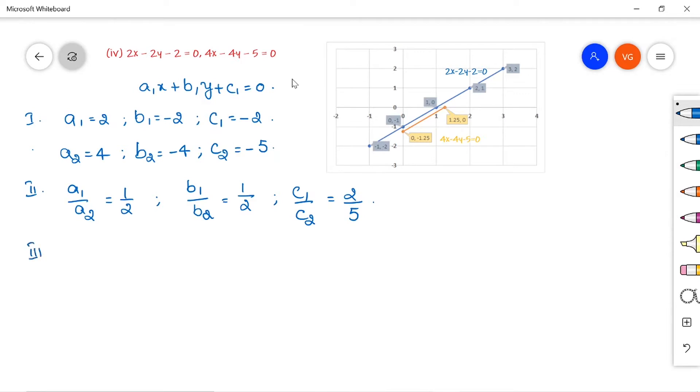Now step 3, you have to compare the ratios. a1 by a2 equals b1 by b2, but not equal to c1 by c2.